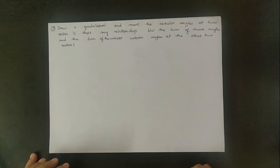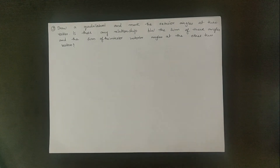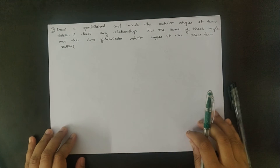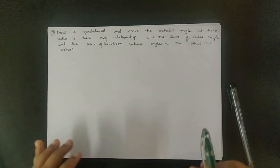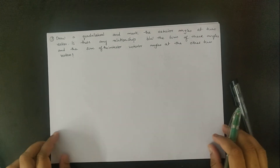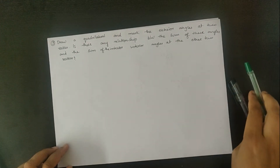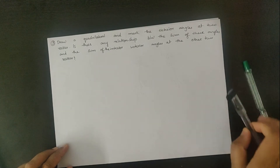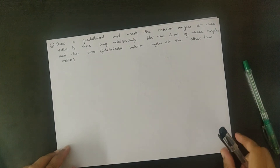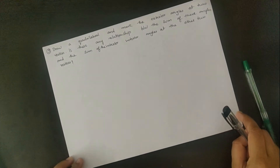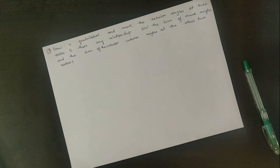Hi friends, now can we move on to the next question? Draw a quadrilateral and mark the exterior angle at two vertices. Is there any relationship between the sum of these angles and the sum of the interior angles at the other two vertices?